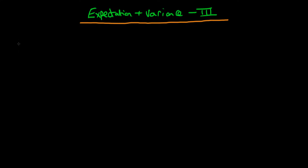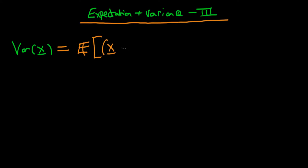In this video I want to complete our run-through of what it means to take the expectation and variance of a random vector, by defining what it actually means to take the variance of a random vector x. The variance of a random vector x is defined as being equal to the expectation of a random vector x minus the mean of a random vector.